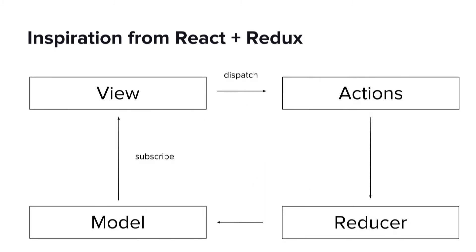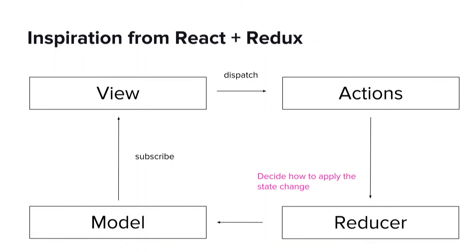At a high level, this is what a React and Redux architecture looks like. React takes care of just the view rendering, and Redux handles the actions, reducer, and model. We start with a user input event in the view, and the user input event is mapped to an action. The action can decide whether the application triggers a network request or directly updates the local state. Once the operation succeeds, it returns with an action payload, such as the success response of the network request. We then pass that payload to the reducer, which decides how to apply that change to the current state, outputs a new state to set on the model, and the view is subscribed to the model — so whenever the single source of truth changes, the view changes as well.